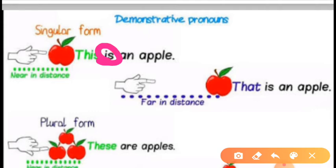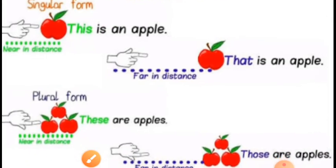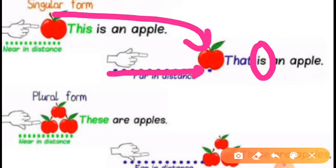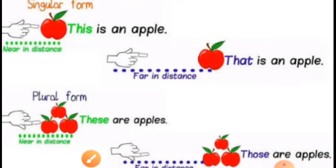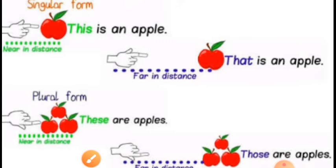'That' is used for a singular noun that is far in distance from the speaker, and it is followed by 'is.' For example: that is a bag, that is a book, that is a pencil box — meaning the thing which is far away from the speaker.